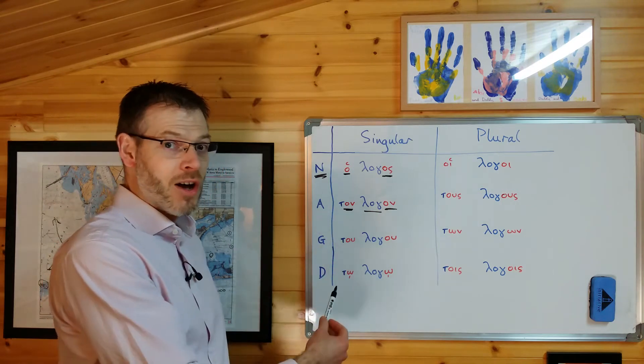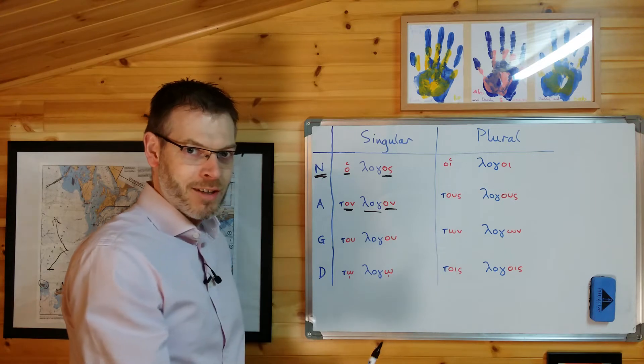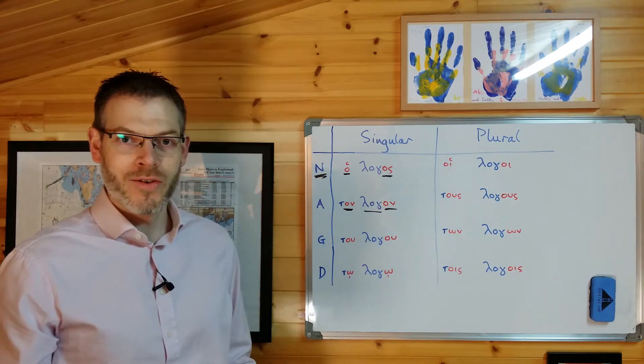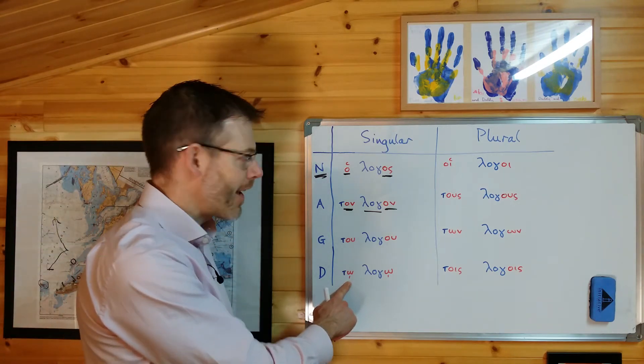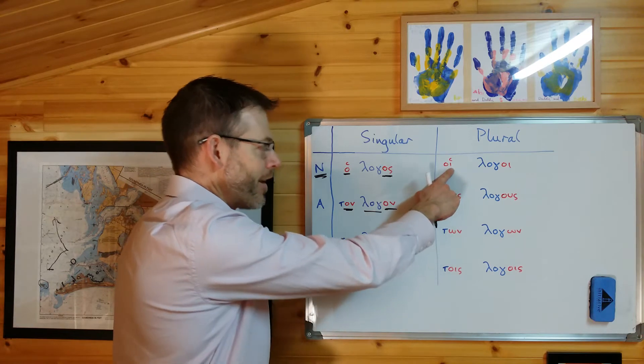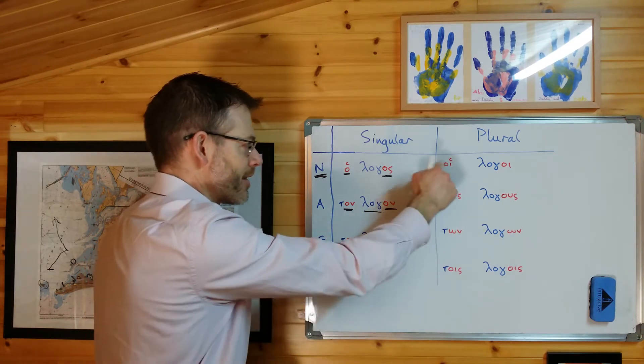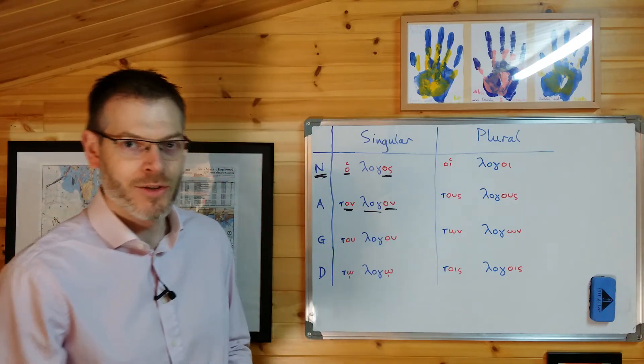Let's just go through the form. The article first. Ho, ton, tu, to, hoi, tus, ton, tois. Ho, ton, tu, to, hoi, tus, ton, tois. Notice a couple of little tiny things. There's an iota subscript there. Don't forget it. The rough breathing is on the iota, not the omicron. You saw that before because it's a diphthong at the start of a word. Ho, ton, tu, to, hoi, tus, ton, tois.